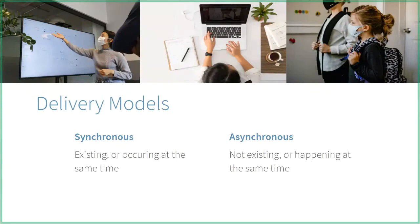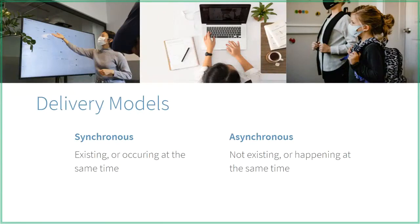Here are simple definitions. Synchronous means existing or occurring at the same time — it's all happening at once. Asynchronous means people are working at different times, tomorrow, today, tonight — at their own pace, which is actually a great way to learn. So there are real benefits to having your lessons set up in both of these ways.